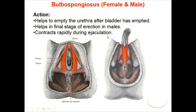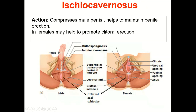Ischiocavernosus arises from the inner aspect of the junction of the ischiopubic ramus and is inserted into the sides and undersurface of the crus penis. In males it compresses the penis to maintain penile erection; in females it similarly helps promote clitoral erection. The superficial transverse perinei muscle attaches to the perineal body, functioning primarily to provide support and stabilize the perineal body.